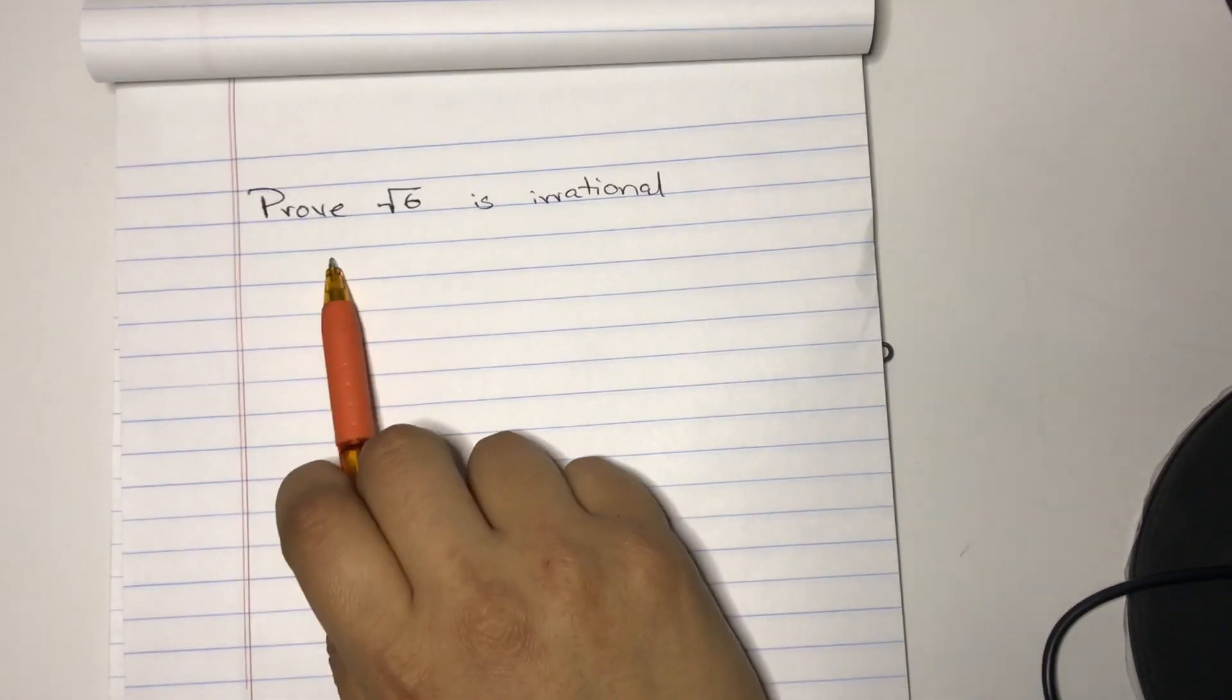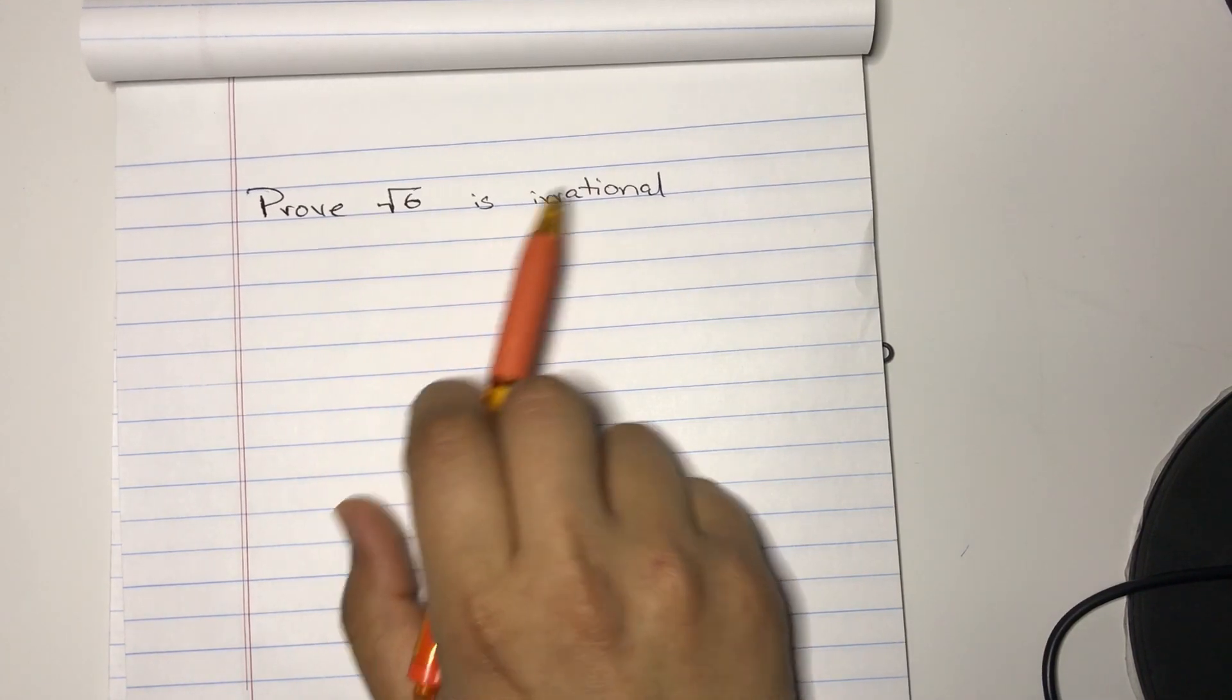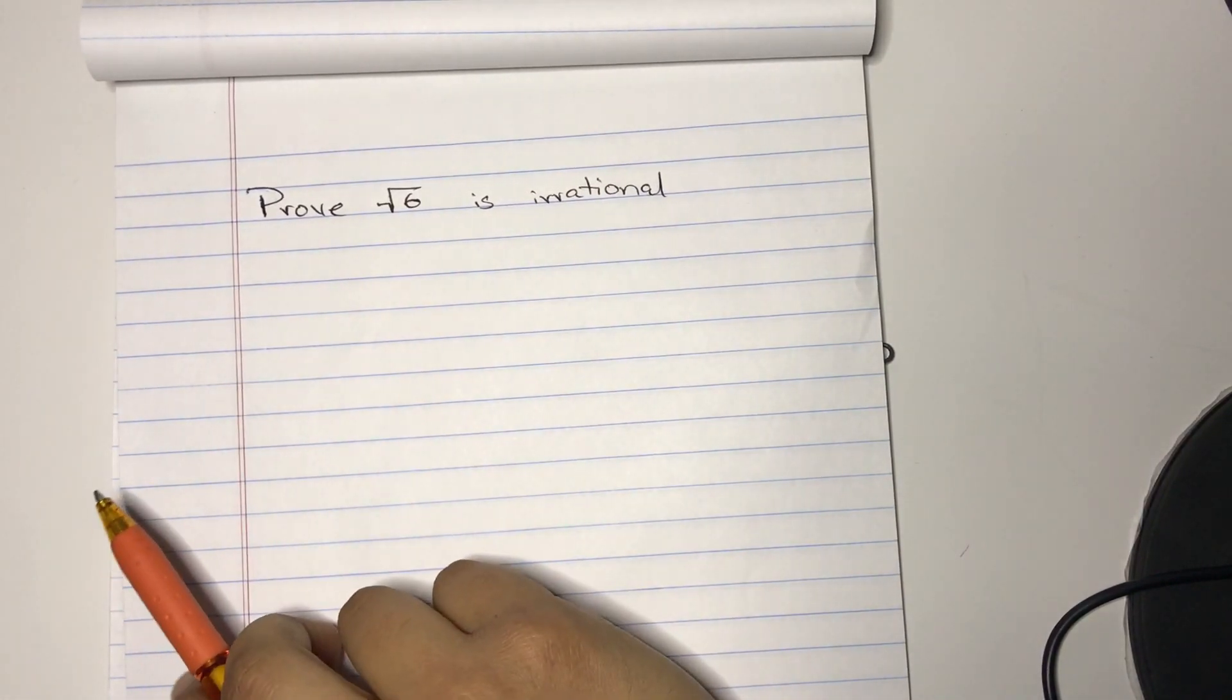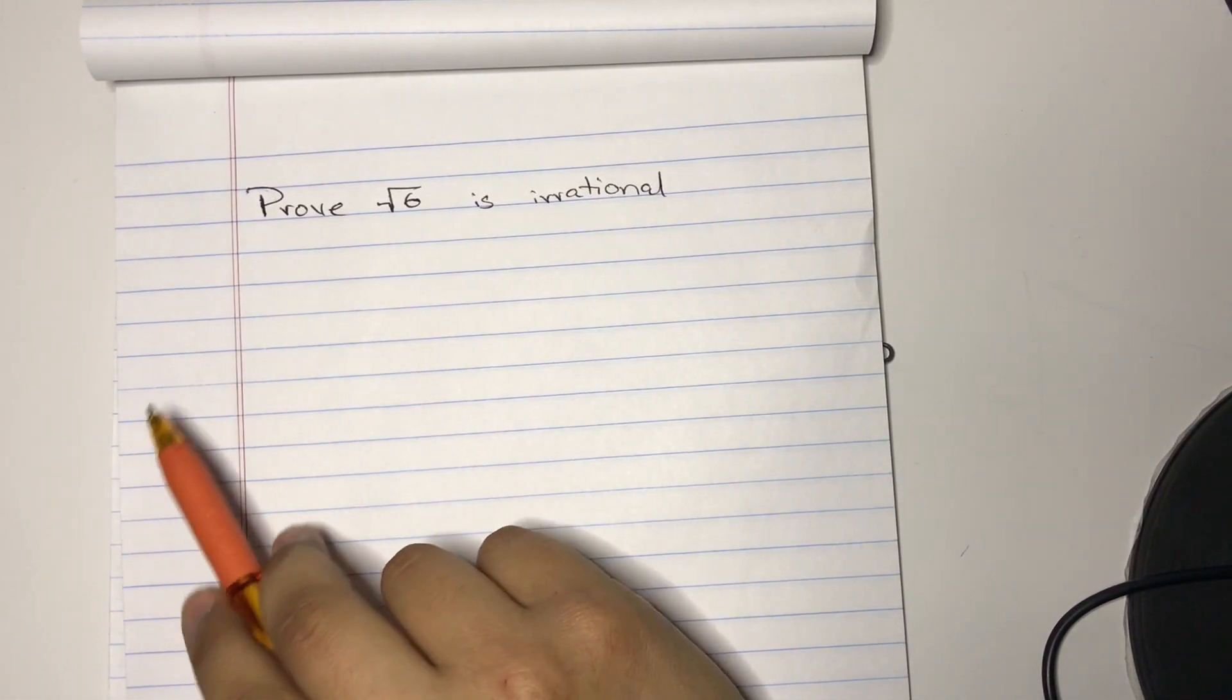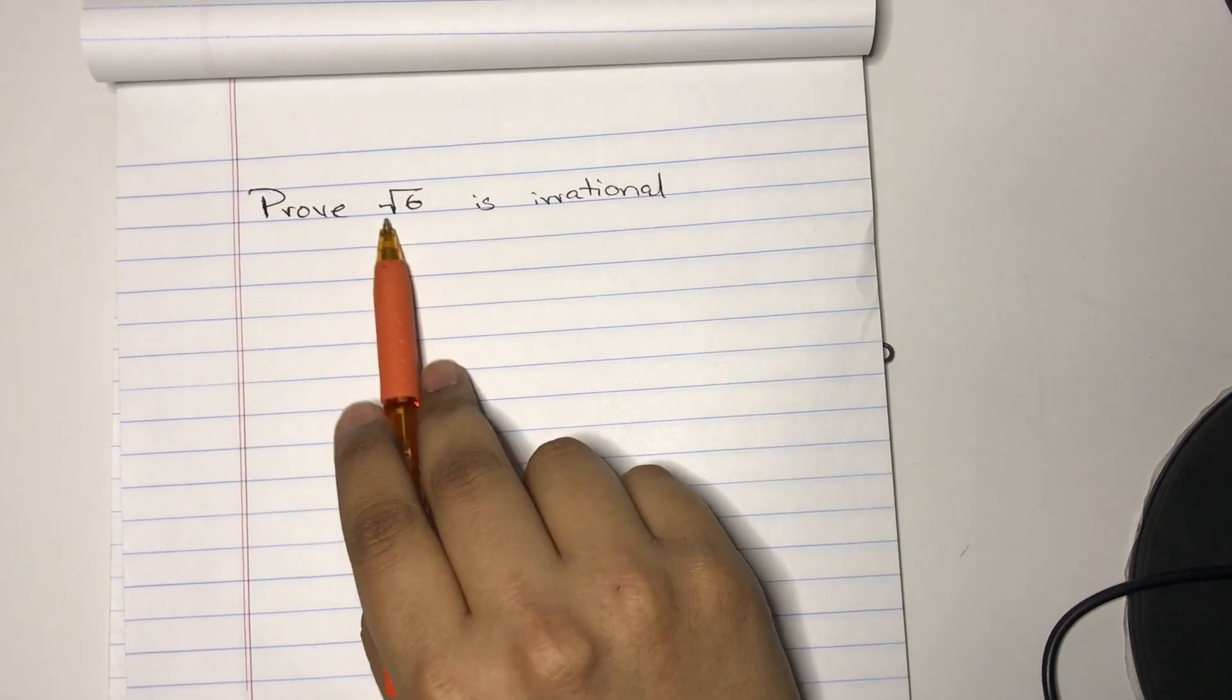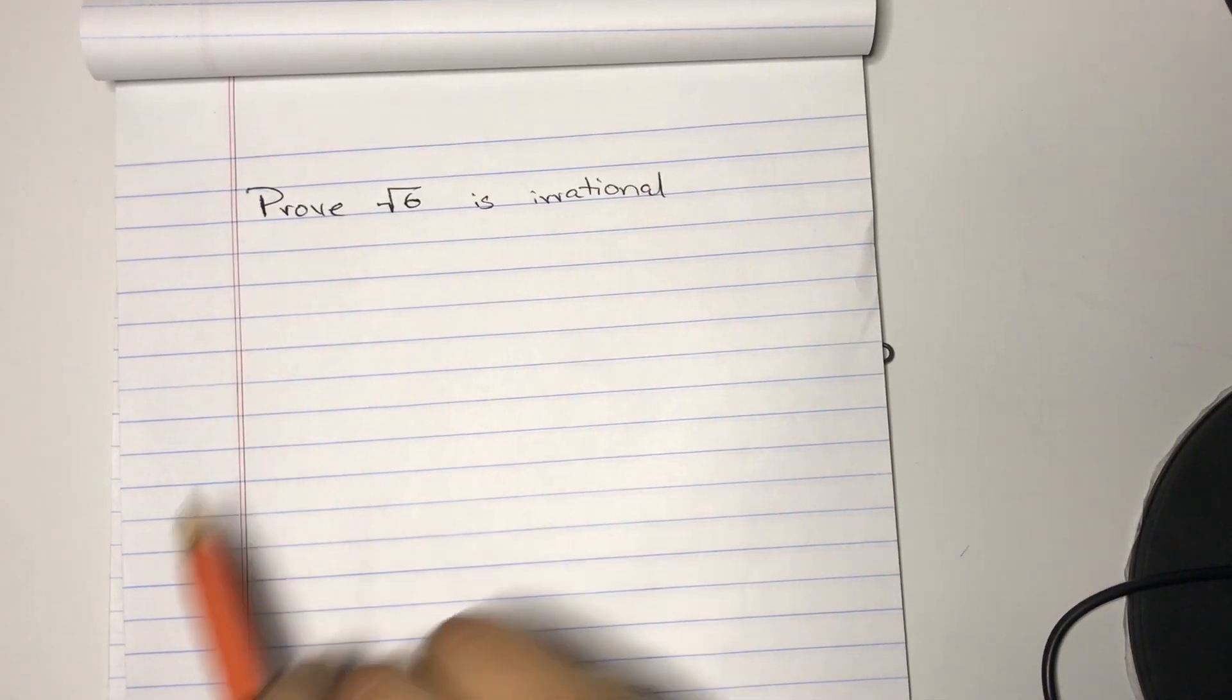Hello and welcome to my channel, Just A Guy Who Likes Math. Today we're going to prove that the square root of 6 is irrational. Like I said a couple episodes ago, everything in math has to be scrutinized and proved, and even if we know this is true, we still have to prove it. So let's get started.